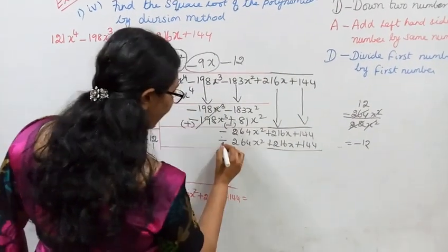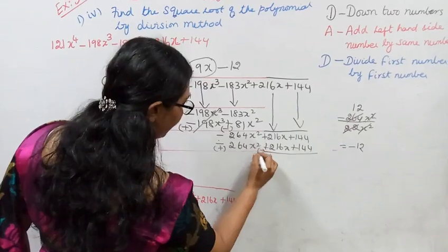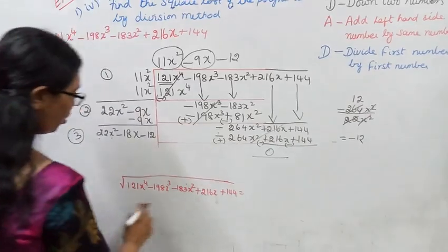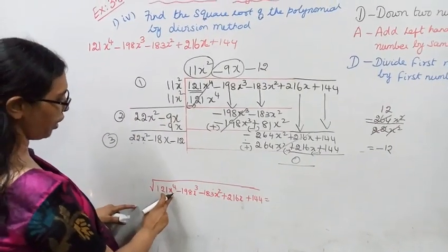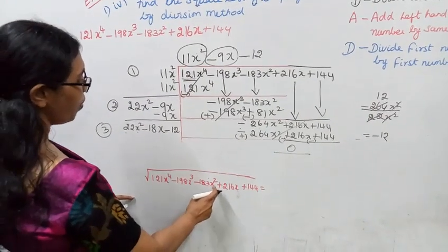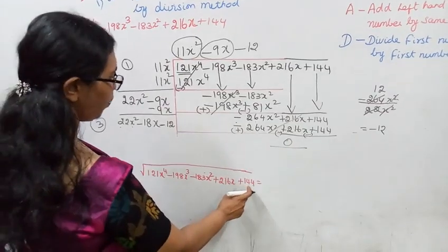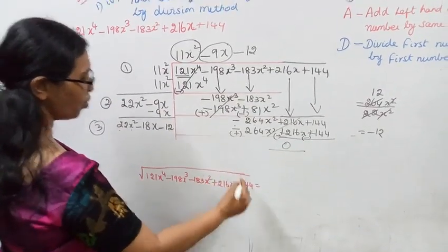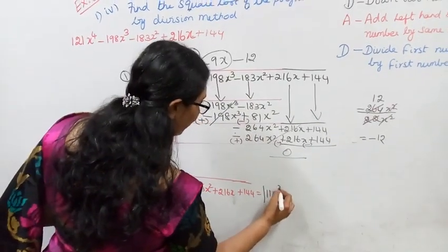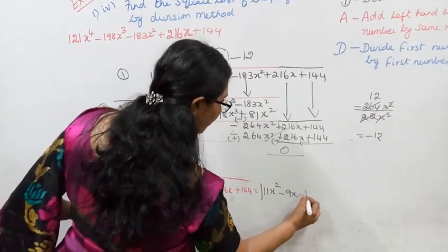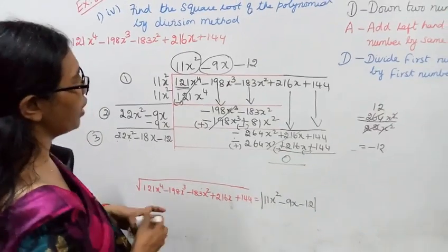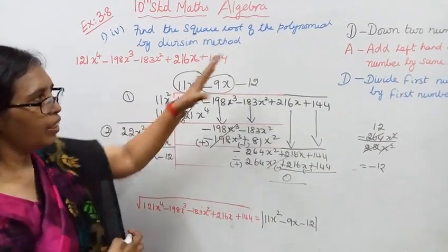Now sign change. Sign change. Answer is zero. Now square root of 121x⁴ - 198x³ - 183x² + 216x + 144. The square root is 11x² - 9x - 12. You can use modulus. You can change the sign with modulus.